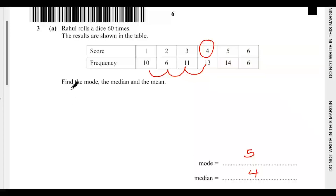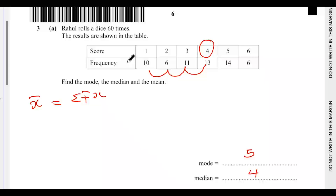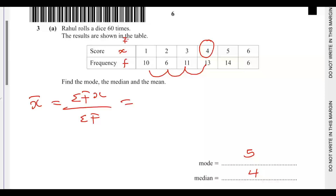For the mean, we use the formula: summation of fx over summation of f, where x is the score and f is the frequency. To find fx: 1 × 10 = 10, 2 × 6 = 12, 3 × 11 = 33.